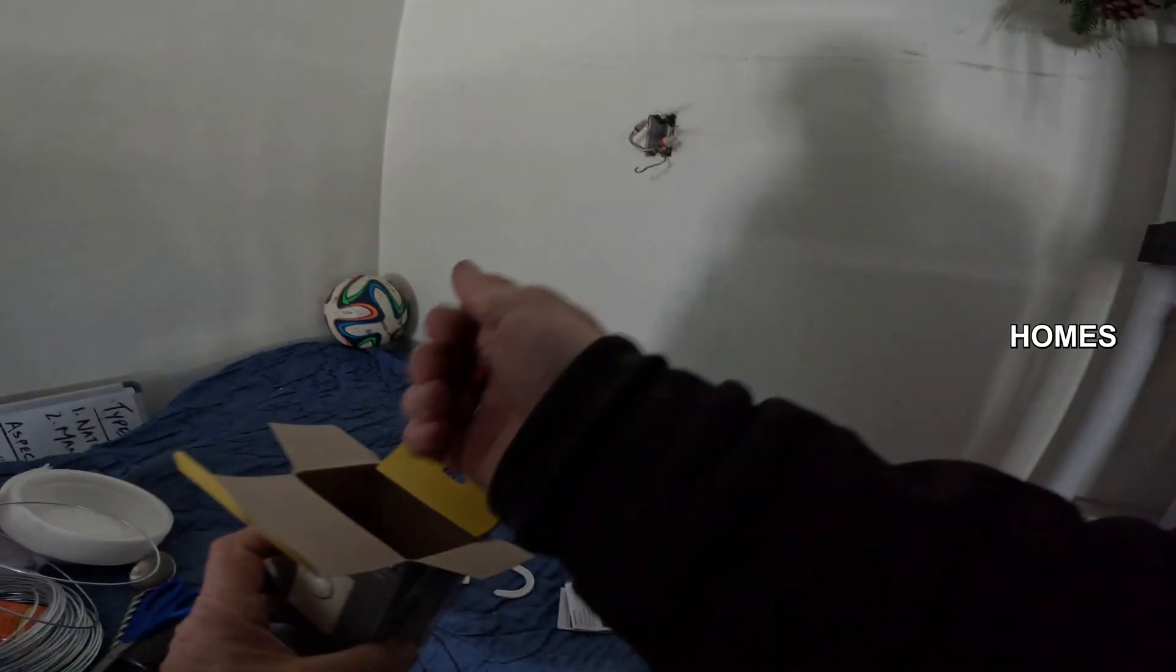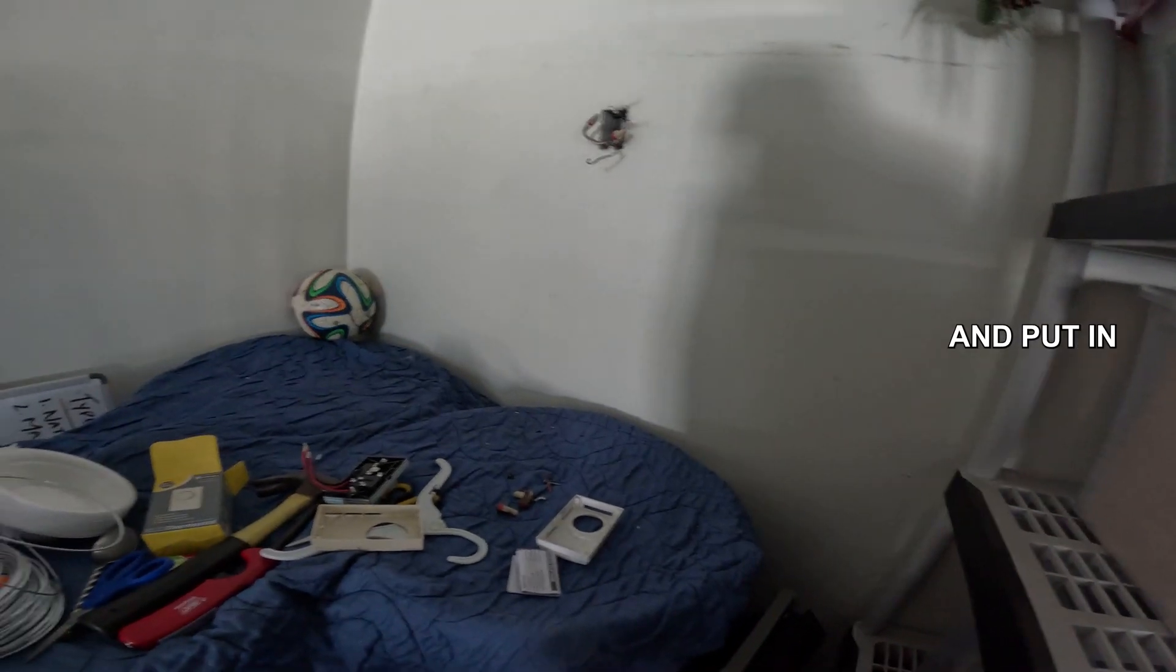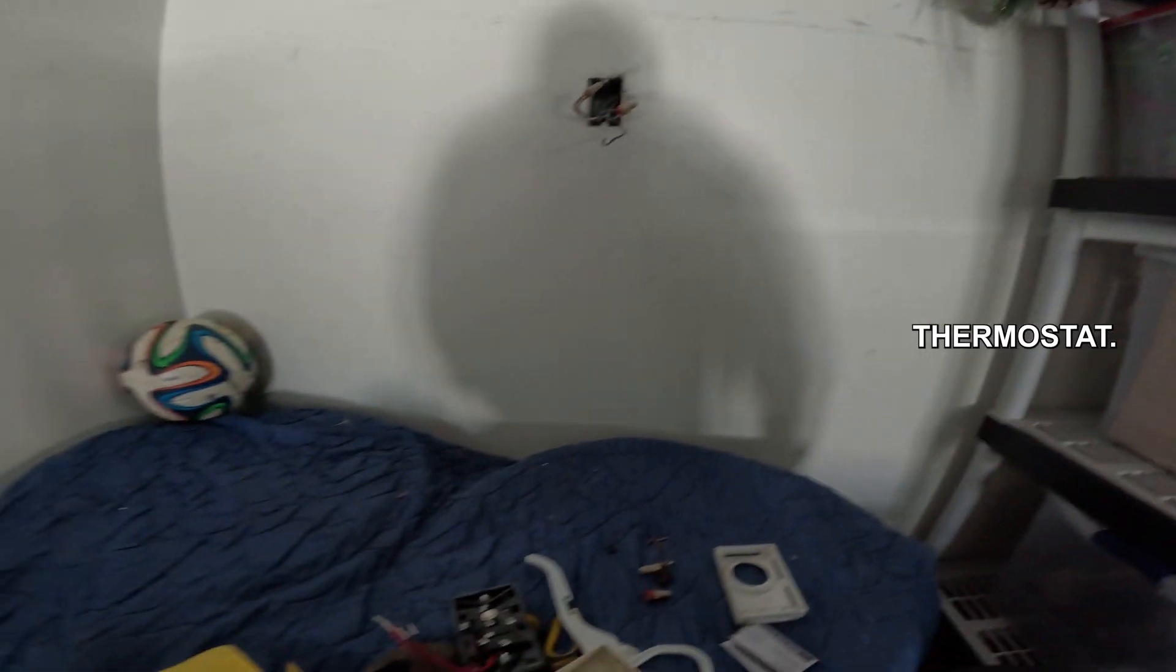A lot of older homes have just single pole thermostats and that's an easy replacement to take out the single pole thermostat and put in a two-pole thermostat to shut the whole thing off. Right now this was already a two-pole thermostat.